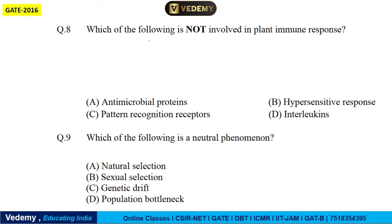Next question: which of the following is not involved in plant immune response? Antimicrobial proteins — seen in plants, so this is true. Phytoalexins — also true. Hypersensitive response — also seen. Pattern recognition receptor (PRR) — we have also seen this. Interleukins — interleukins are mainly in the mammalian system, not involved in plant cases. So the answer, which of the following is NOT involved in plant immune response, will be D — interleukins.